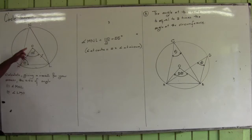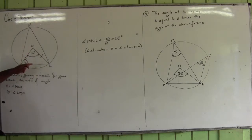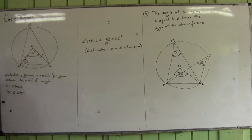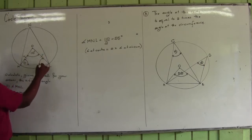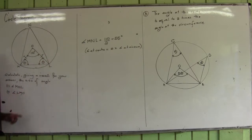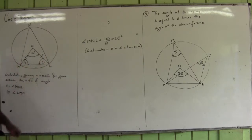The two equal sides meet at the apex, and opposite from the apex is the base. The two base angles of an isosceles triangle are equal. So if this angle is theta, this angle is also theta.